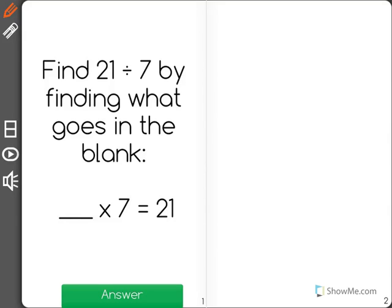Find 21 divided by 7 by finding what goes in the blank. So here's our blank. Blank times 7 equals 21.